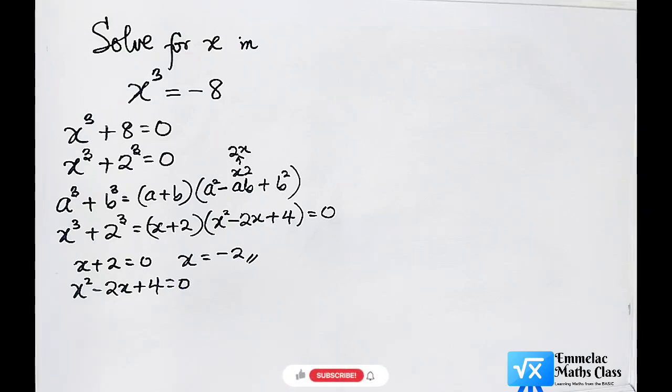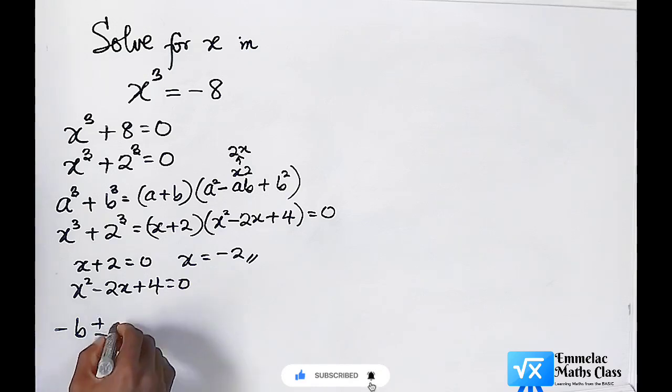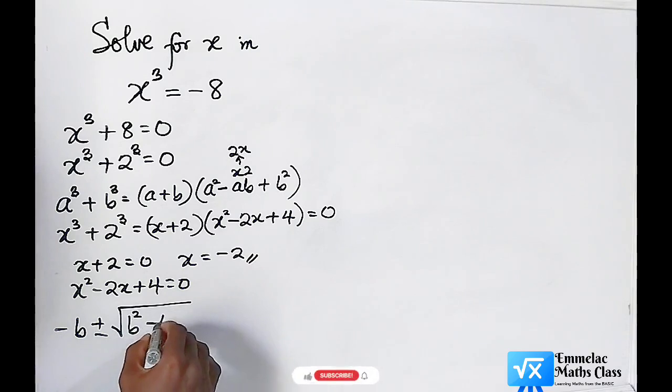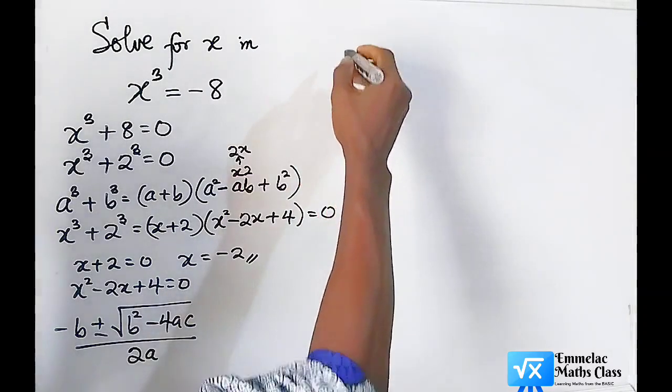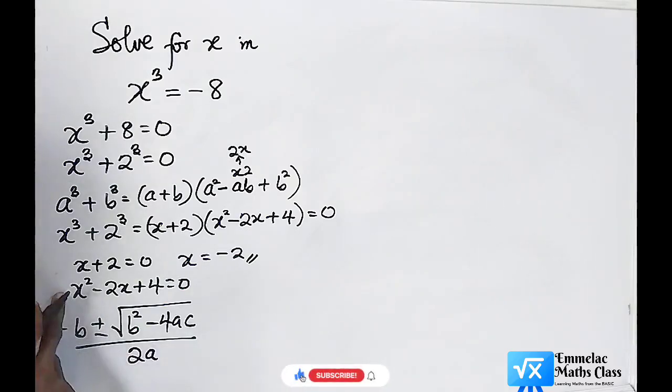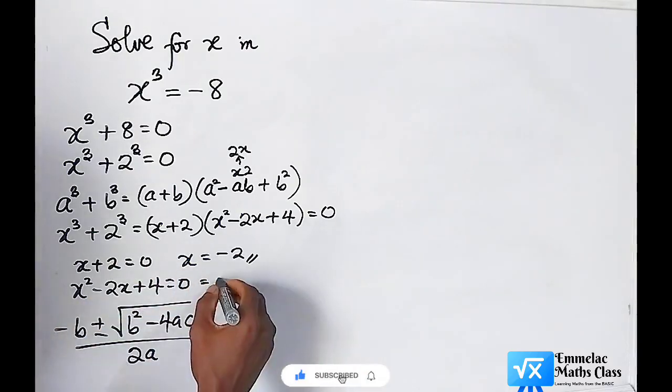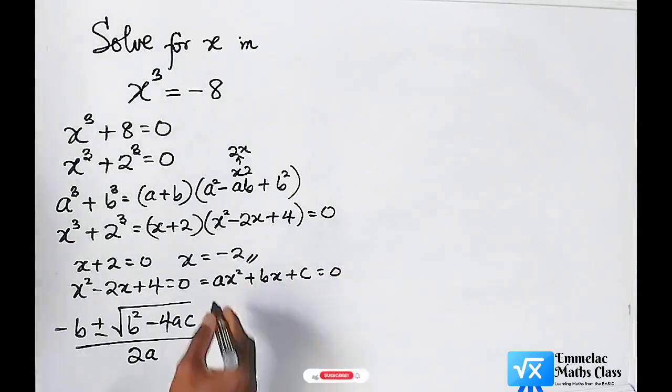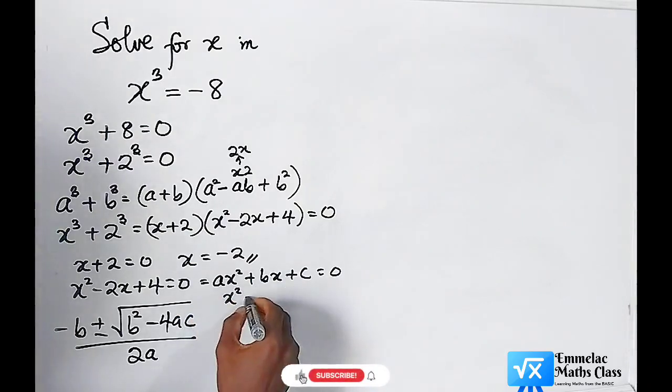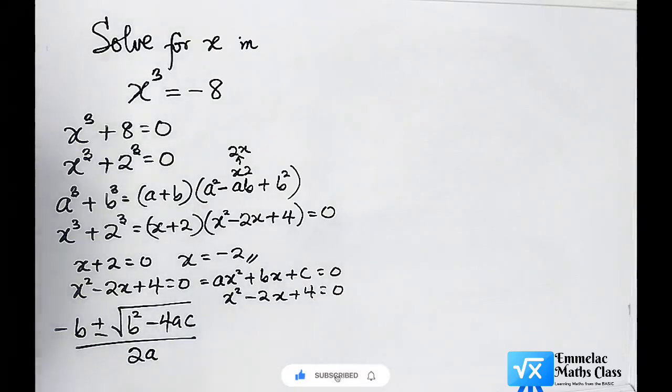To that regard, we're going to use the quadratic formula. That will be x = (-b ± √(b² - 4ac)) / 2a. From the equation x² - 2x + 4 = 0, which is similar to ax² + bx + c = 0, we can see that a = 1, b = -2, and c = 4.